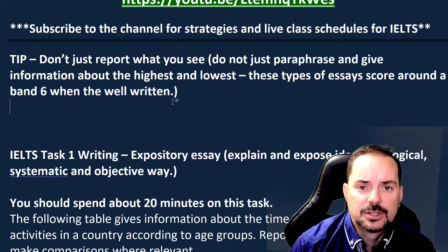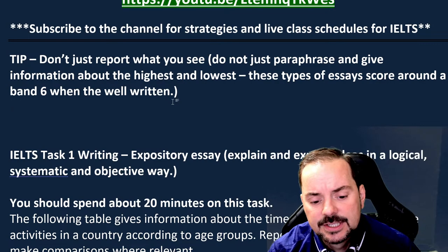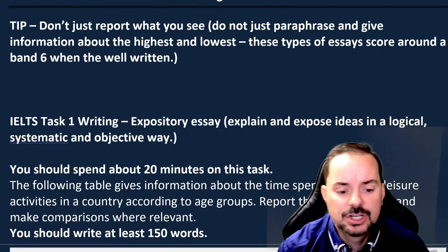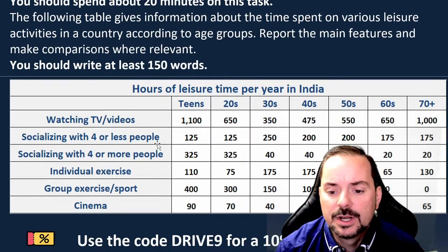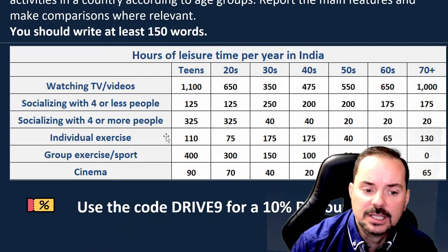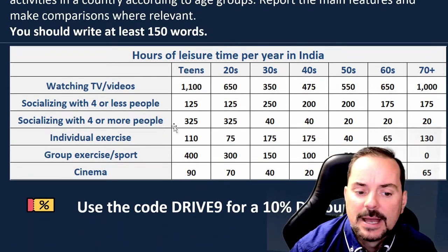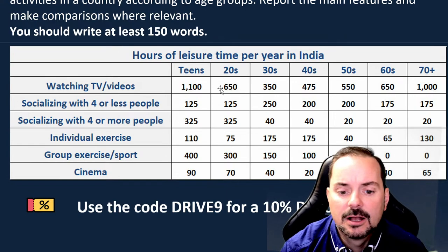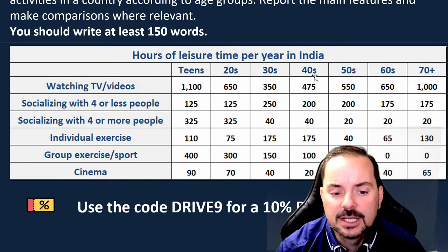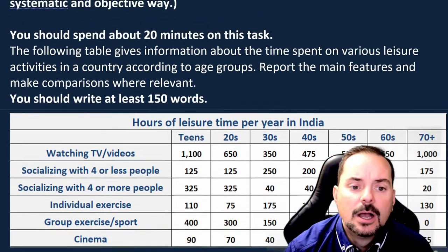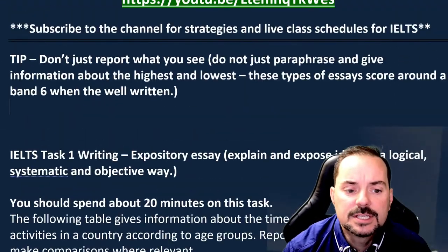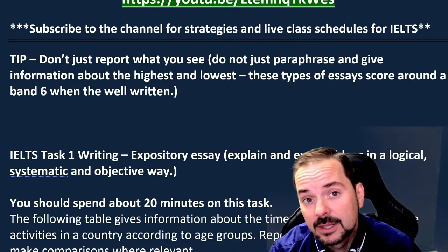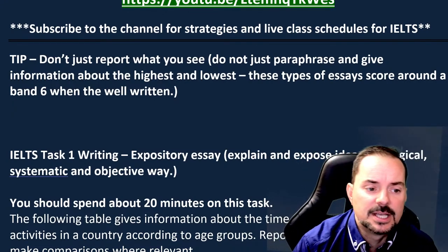Don't just paraphrase the question and then say things like: 'The most was teens watching TV at 1,100 hours. The least was group exercise and sport for people in their 60s and 70s in India with zero hours.' These types of essays tend to get a band six if you don't make spelling and grammar mistakes.